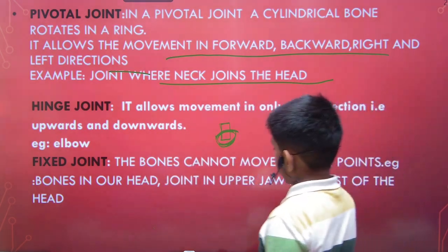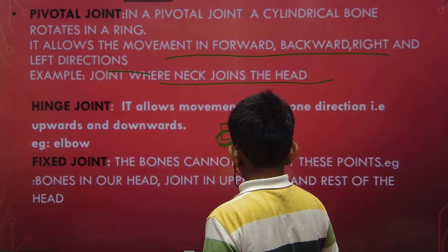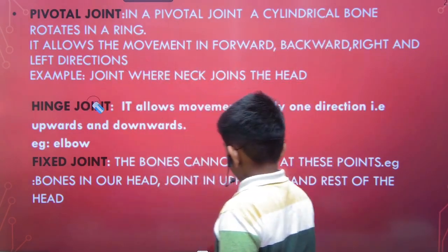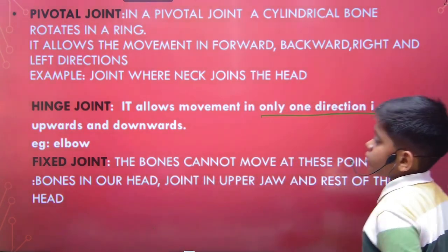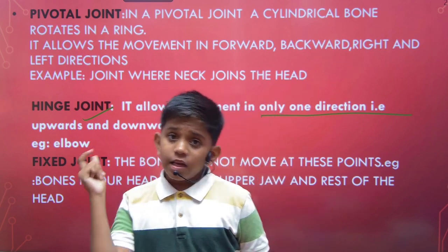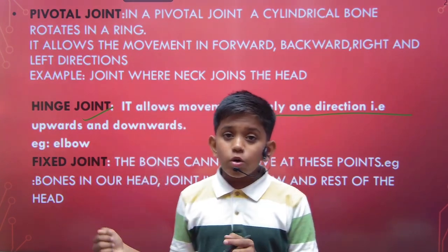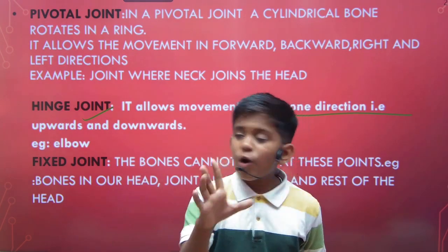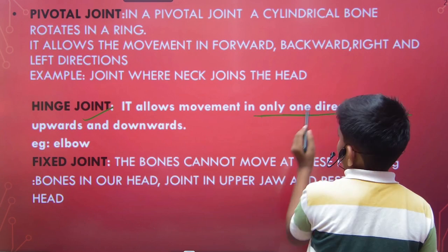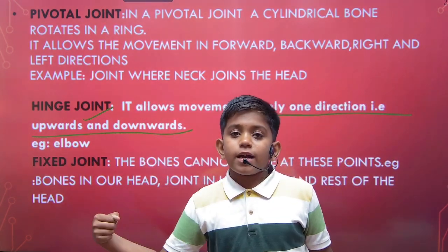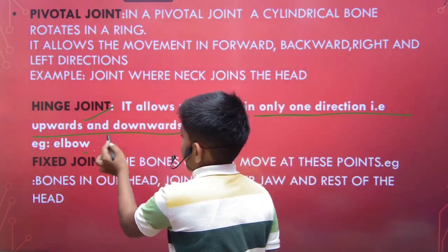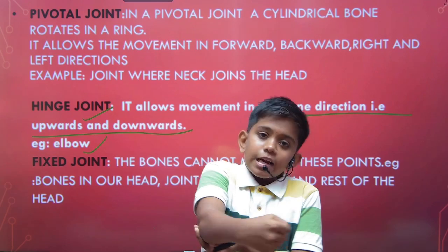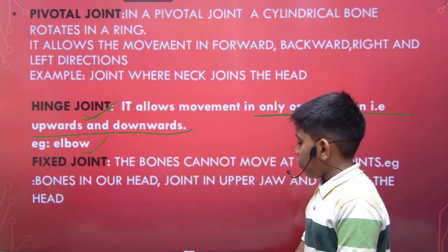Next we have the hinge joint. The hinge joint allows movement in only one direction. Think of a door hinge — you can only open and close it; you cannot take it up or sideways. Similarly, the hinge joint allows movement upward and downward only. The example is the elbow — it only allows us to move it upward and downward; we cannot turn it left and right.